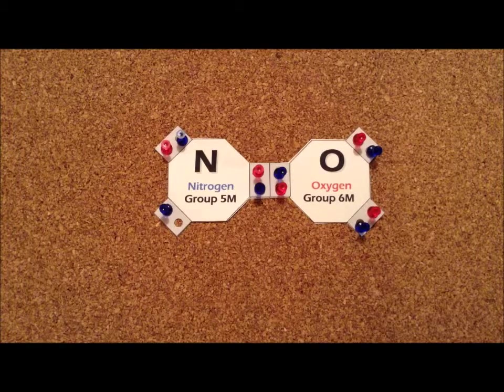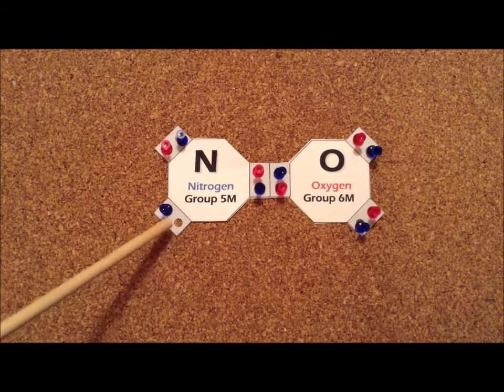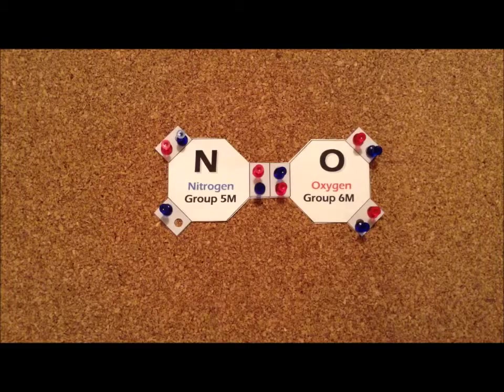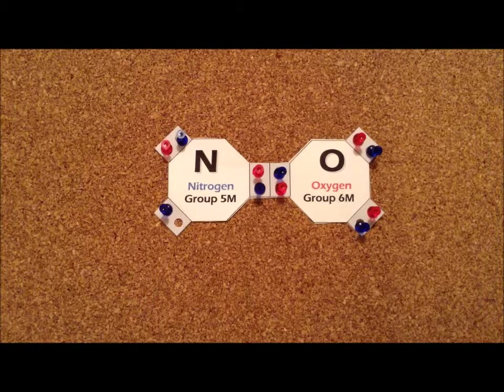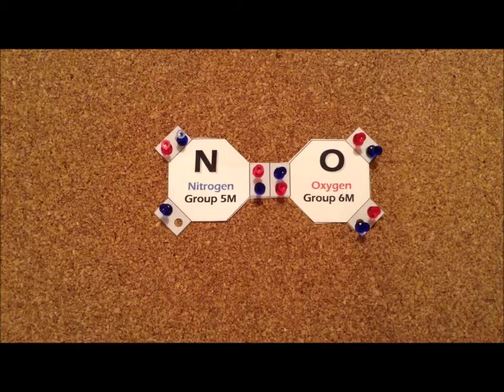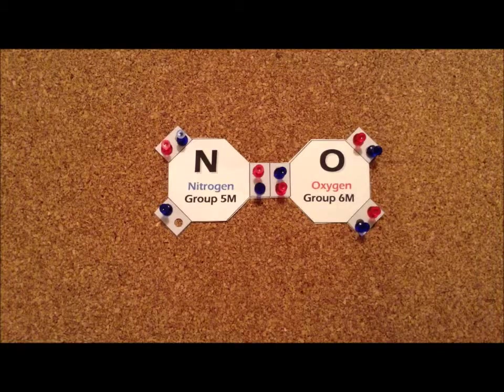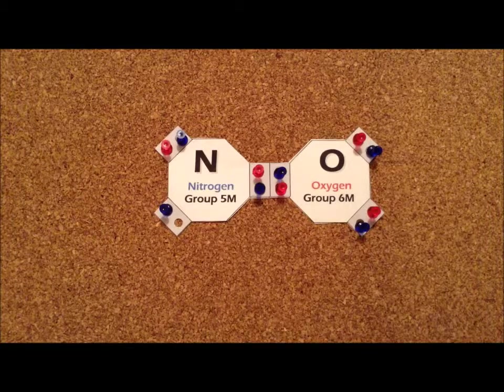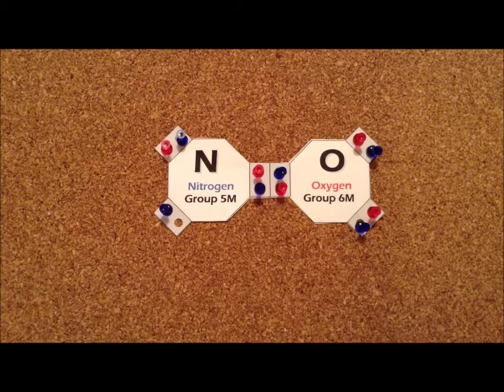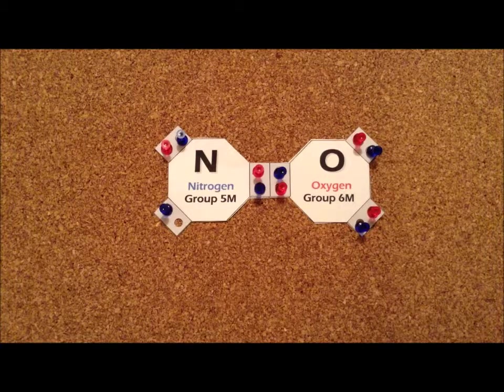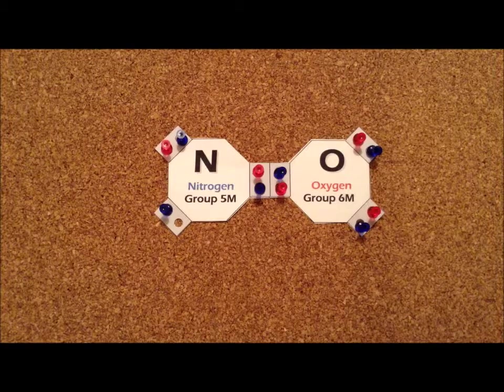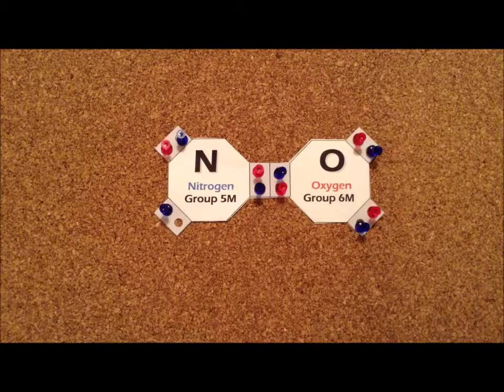We are not able to satisfy the octet rule for nitrogen, for example. We see that there is an empty hole here, and there is only seven electrons around the nitrogen atom. We had previously said that these types of compounds are called free radicals, and that free radicals tend to be particularly reactive and often only have a fleeting existence. Nitric oxide is something of an exception to that rule, because this is a molecule that is a relatively stable free radical. It is an extremely important signaling molecule in biological systems.